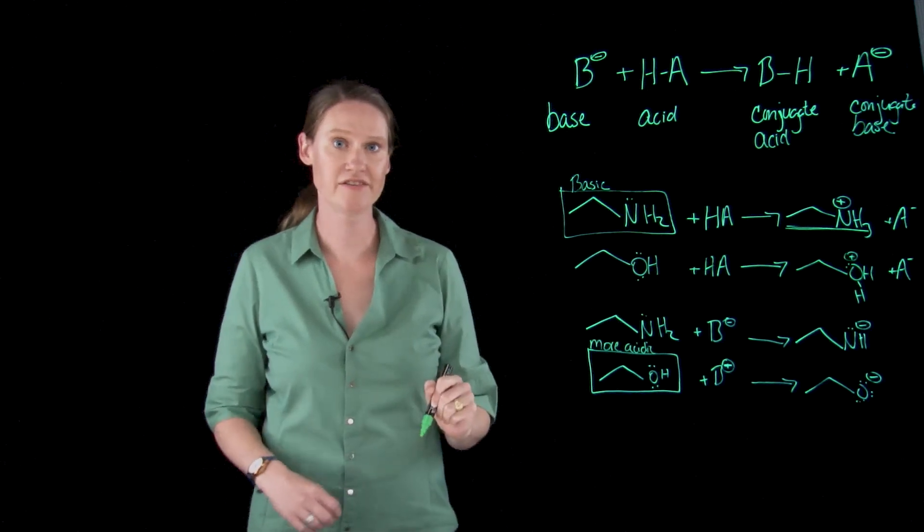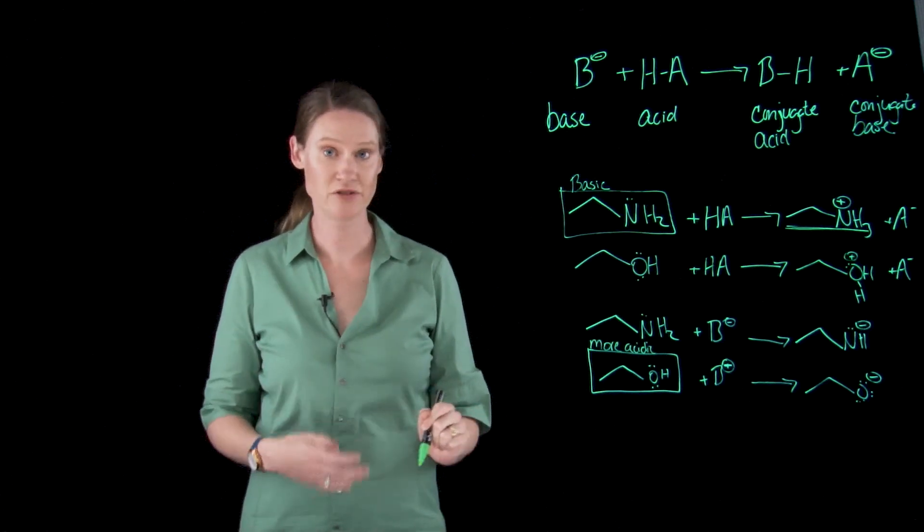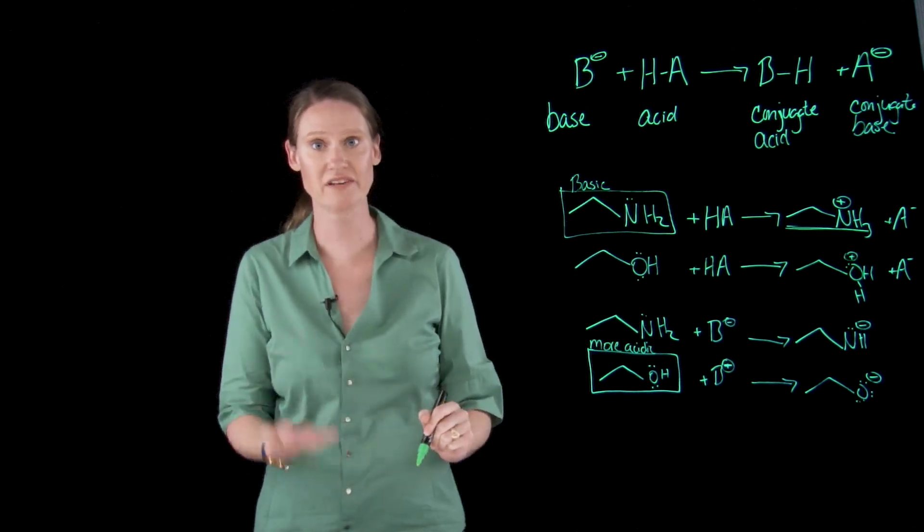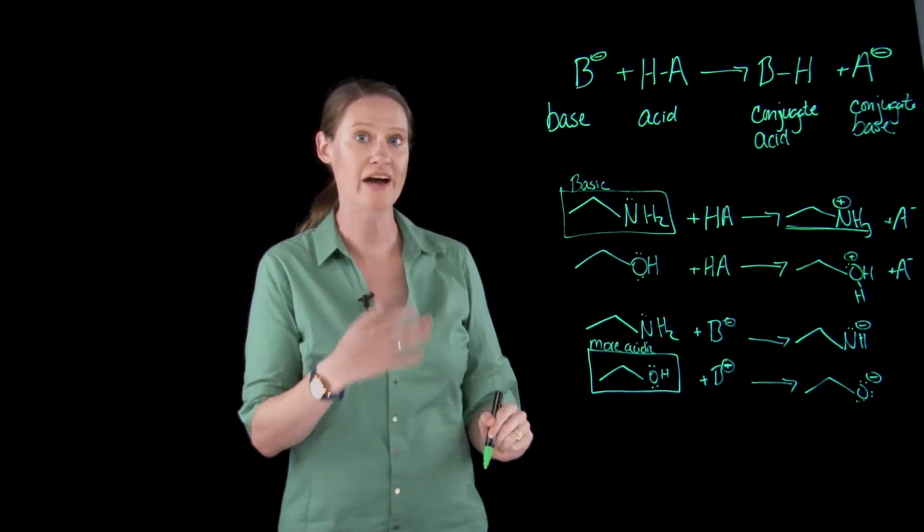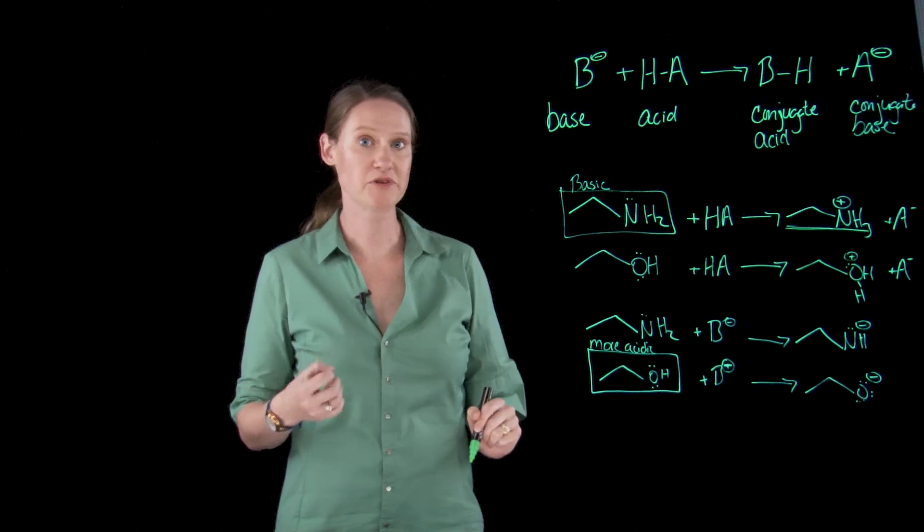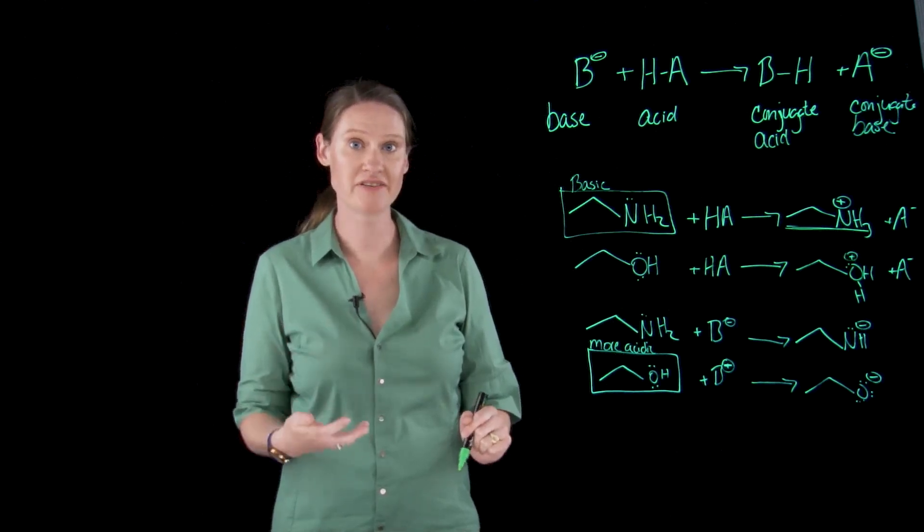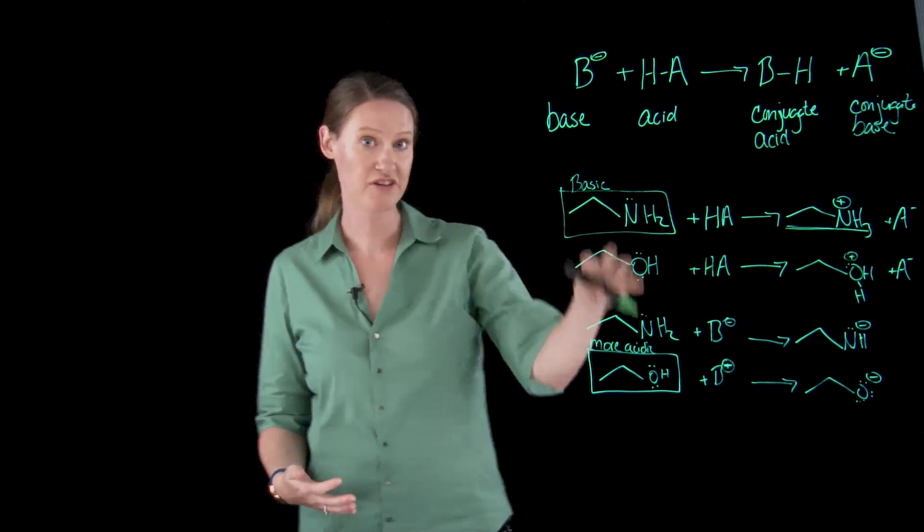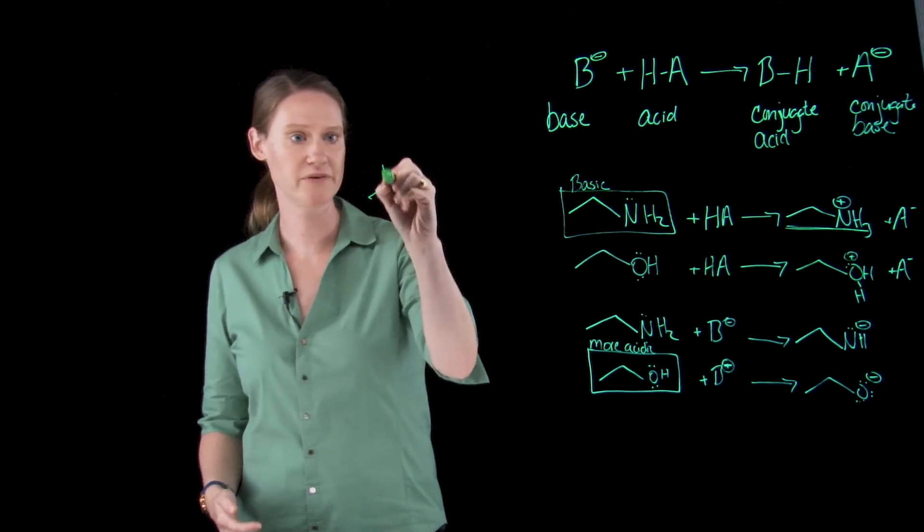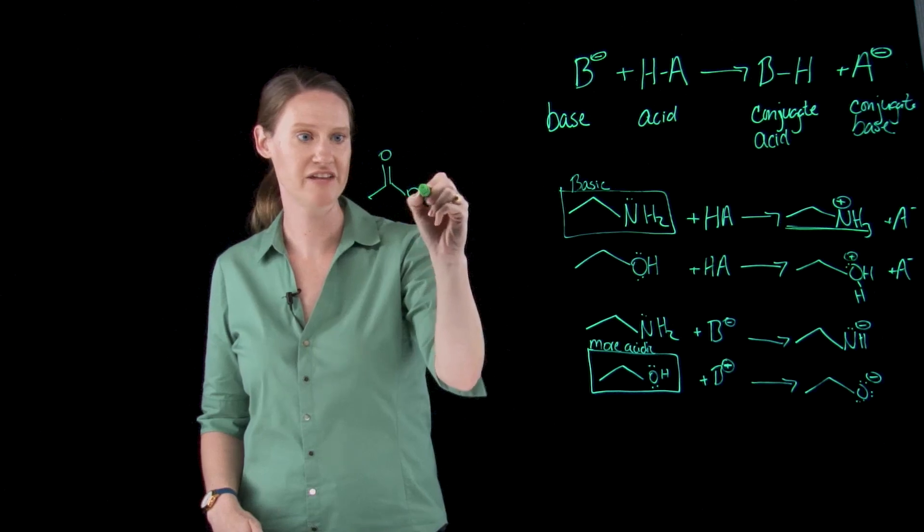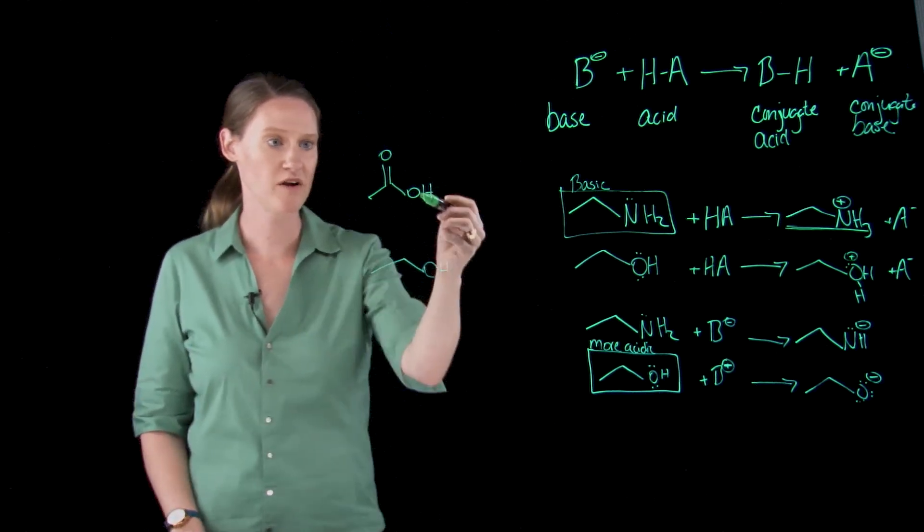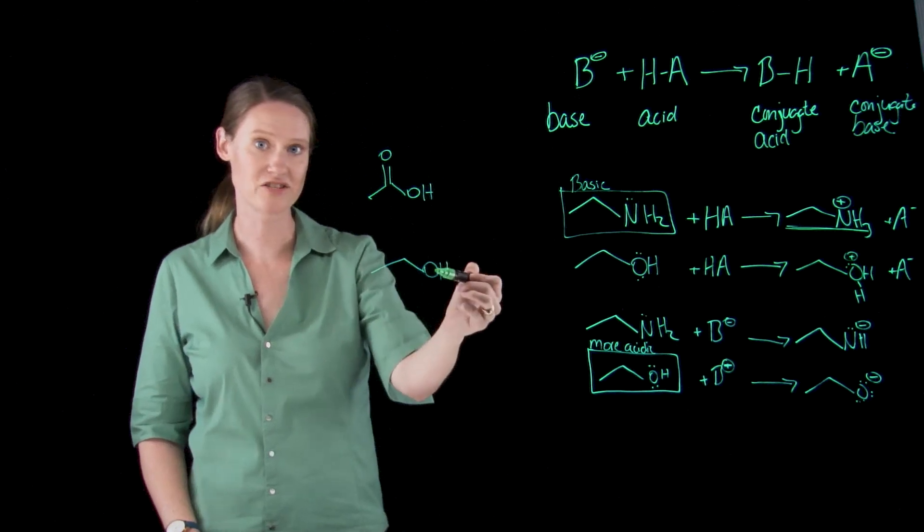In a lot of cases you can do this exercise and use the periodic trends to figure out if something's going to be more basic or more acidic than another atom. The other really important concept that comes into acidity and basicity is resonance. We can use periodic trends but what would we do with an example like this?